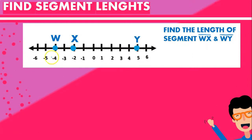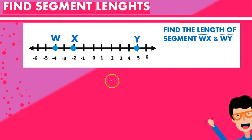So let's say we have a line with points W, X, and Y whose coordinates are minus 4, minus 2, and 5. And let's say they ask us to find the length of the segment WX and WY.